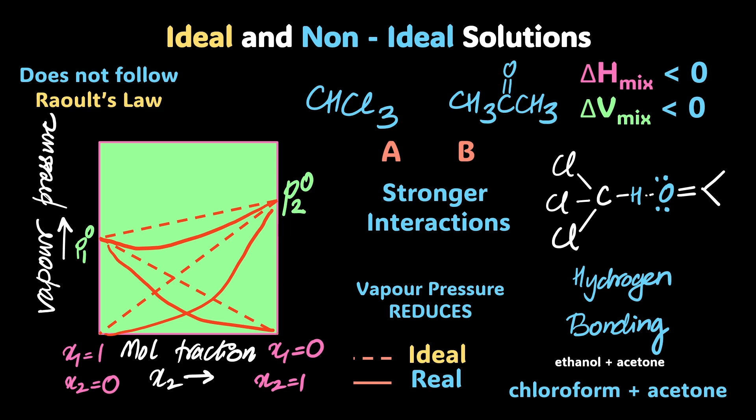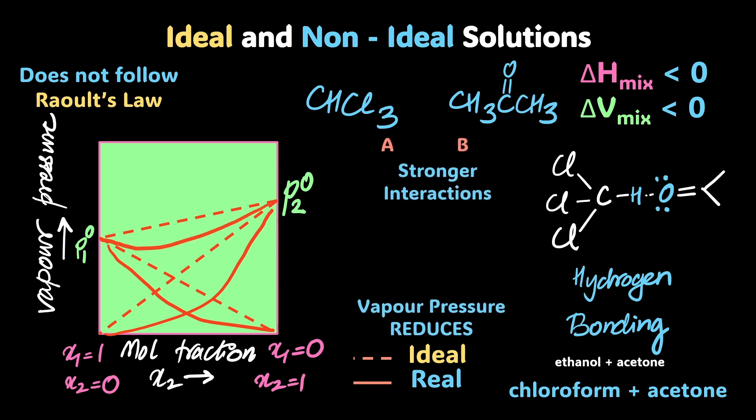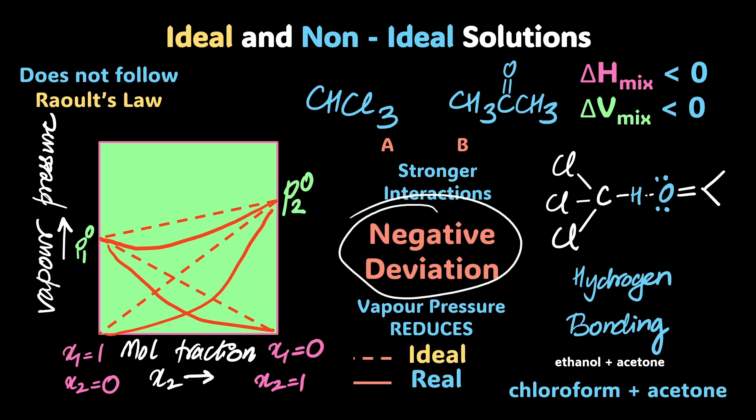Because the vapor pressures at every point are lower than expected, the overall pressure is also lower. This is a negative deviation from ideality. ΔH mixing < 0 and ΔV mixing < 0. The solution does not follow Raoult's law.